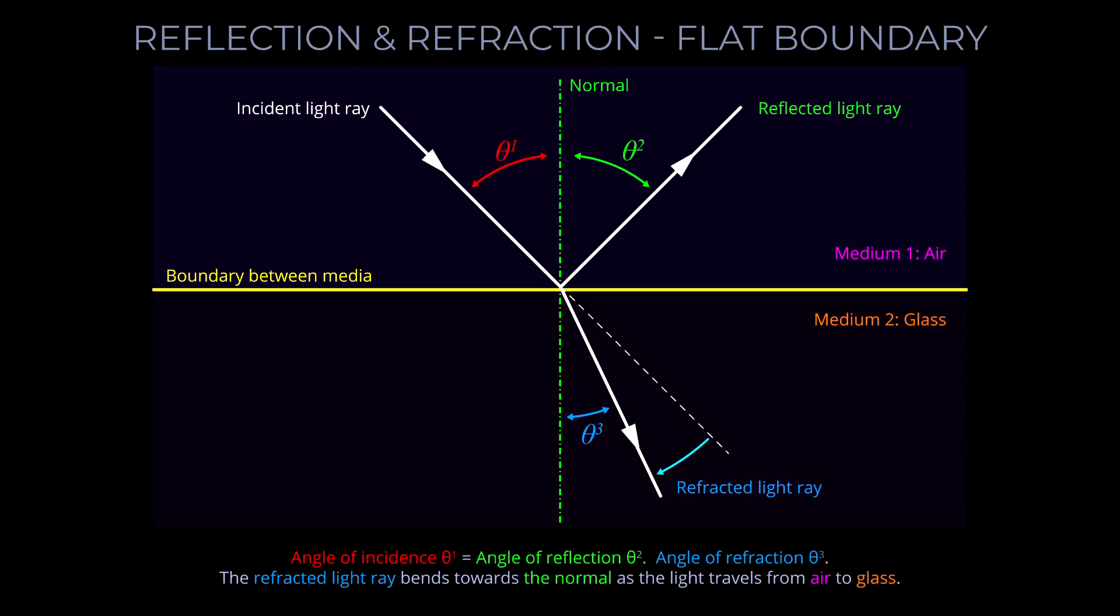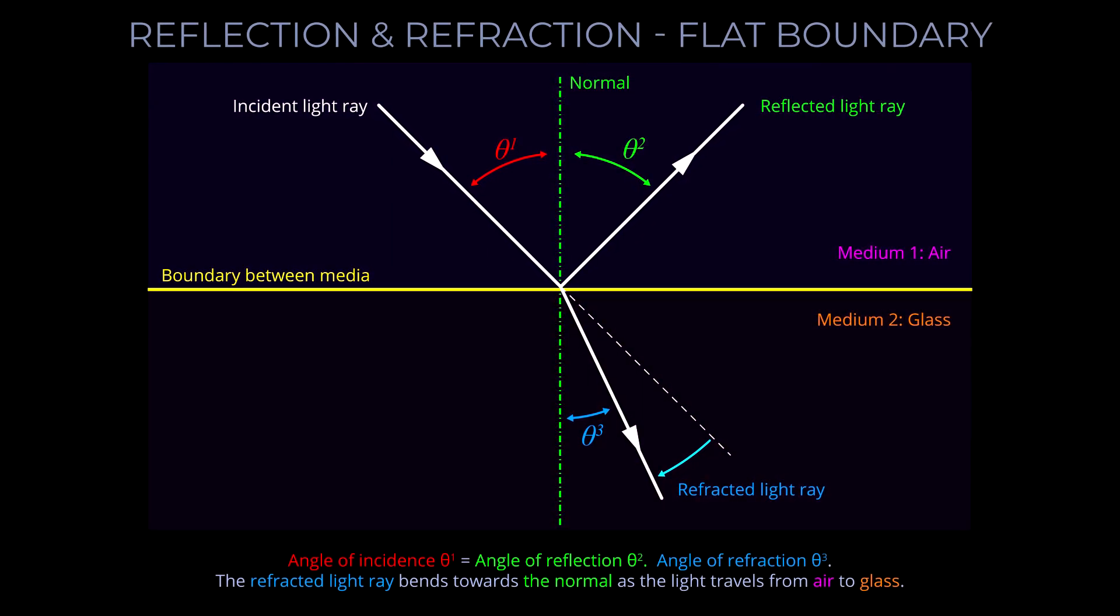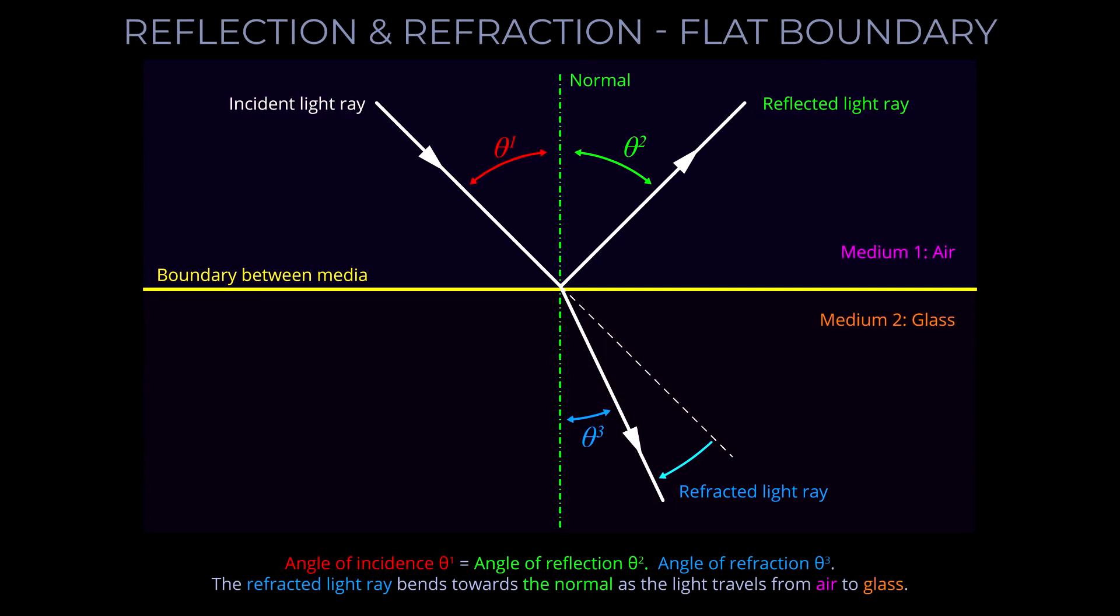Reflection, refraction, and absorption of light are the basic processes that occur when light interacts with matter. Let's break each of them down a bit.